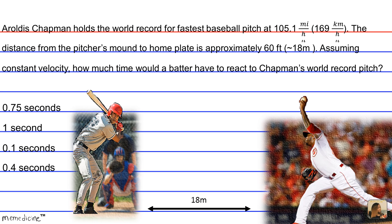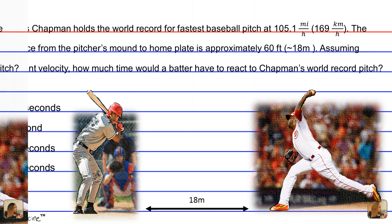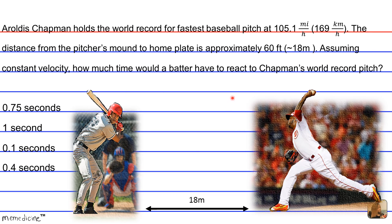Hopefully by now you've had enough time to figure out the correct solution, but if not, that's totally fine — let's look at it right now. We're given the final and initial velocity. The initial velocity is going to be 0, and the final velocity is 169 kilometers per hour, since this is closer to the SI units we're accustomed to using. We're also given the displacement, which is 18 meters. Because we're told to assume constant velocity, we can use the formula D = VT.